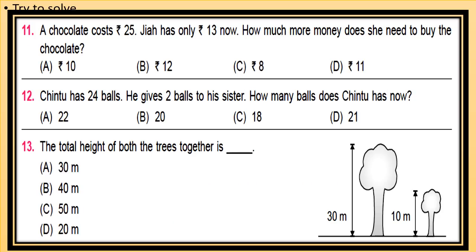Now we have already done question number 11, so go to question number 12. Chintu has 24 balls. He gives 2 balls to his sister. How many balls does Chintu have now? Chintu has 24 balls, he gives 2 balls to his sister. So how many balls does Chintu have now will be 24 minus 2.